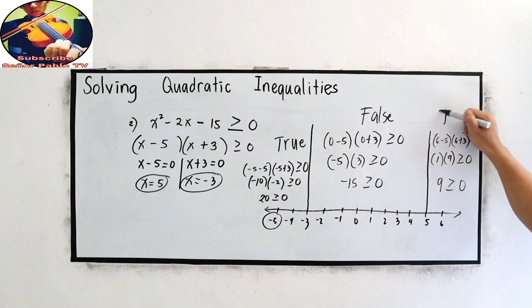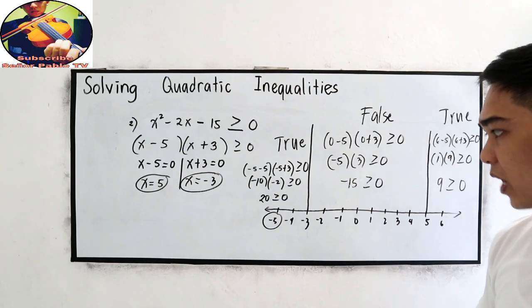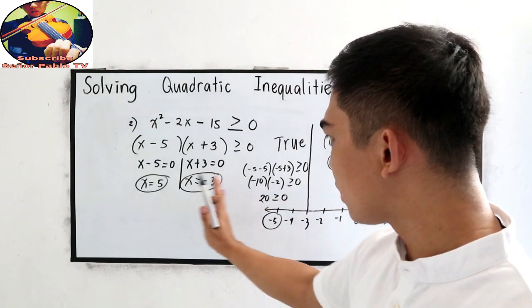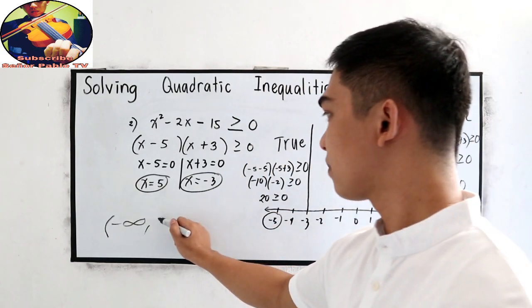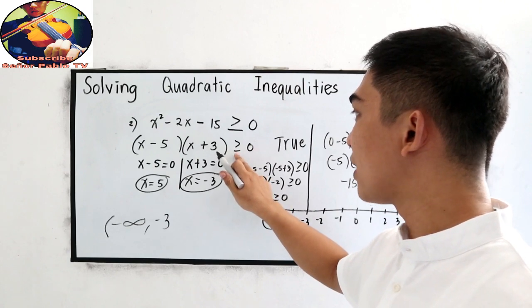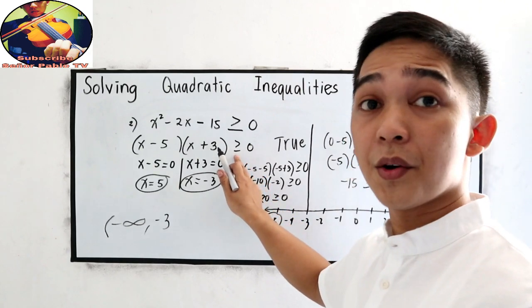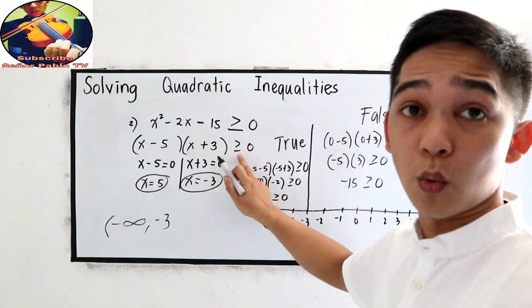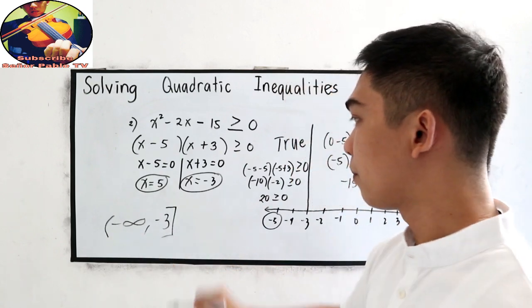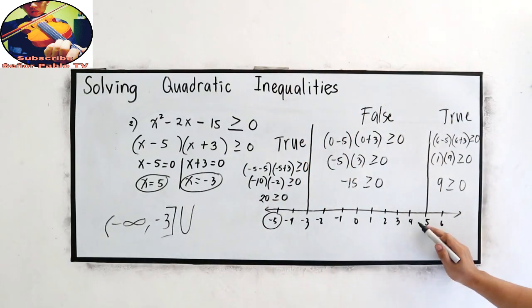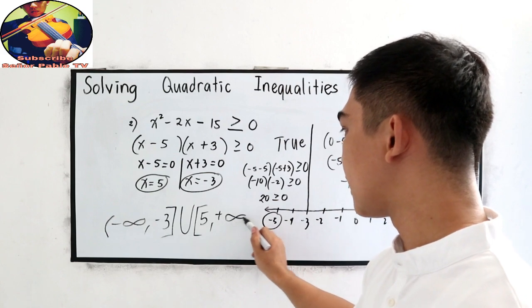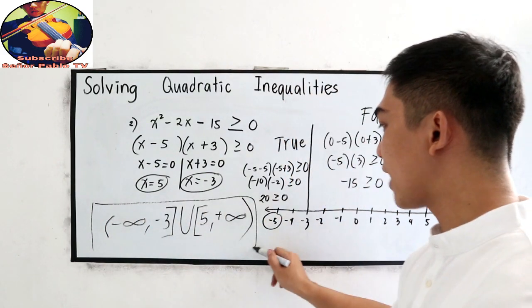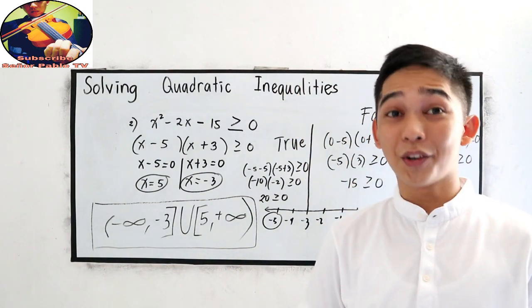This is true. So that means our interval notation, our final answer is: this is true. We're going to negative infinity. So open to negative infinity. Then negative 3. That means we have equal to negative 3. Open or close? So negative 3 is included because we have the equal sign. So we're going to close. Union 5. 5 is also included. This is now our final answer in our quadratic inequality.